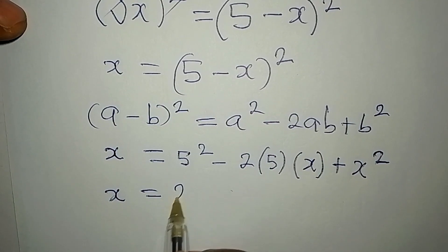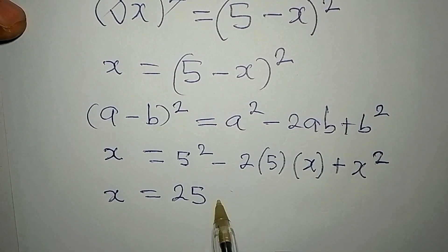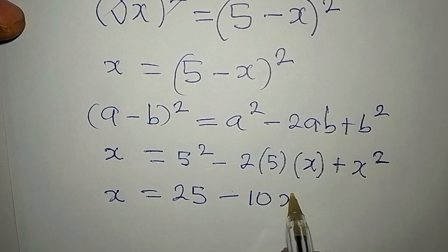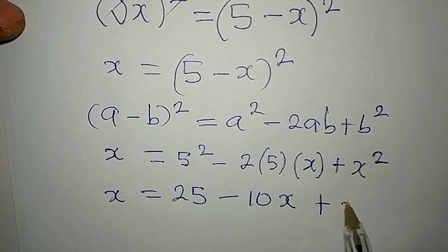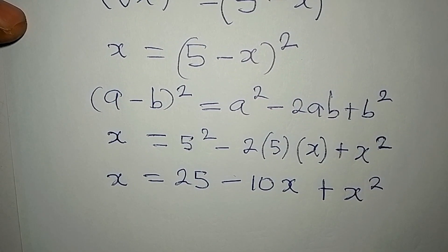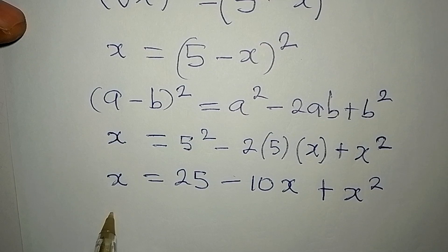Okay, so let's continue. Now from here we have x to be equal to 25 minus 2 times 5 is 10 times x is 10x, then we have plus x squared. Now the next thing is to rearrange. We're going to write x squared first.